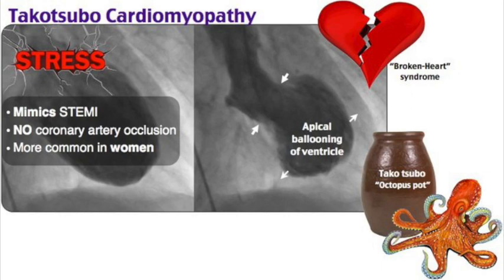The pathophysiology of Takotsubo is thought to be multifactorial, but includes a catecholamine surge during physical or emotional stress, microvascular dysfunction, and coronary artery spasm. Clinical manifestations are similar to ACS, with substernal chest pain, dyspnea, and syncope.